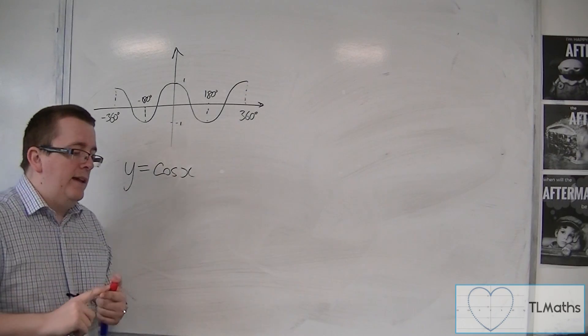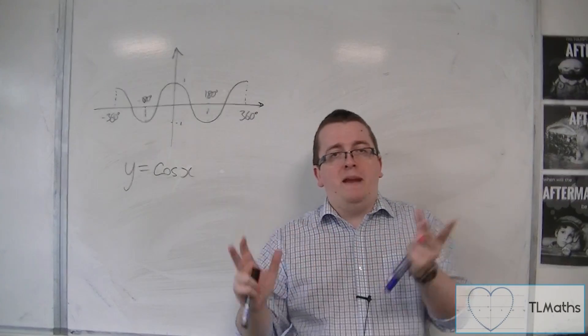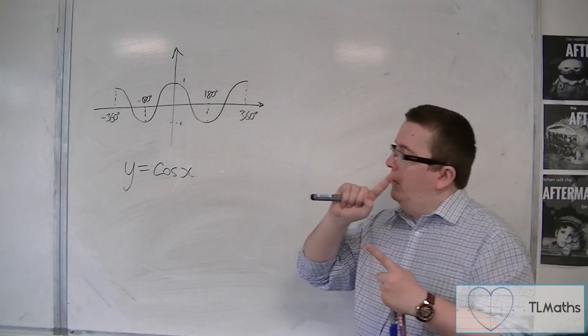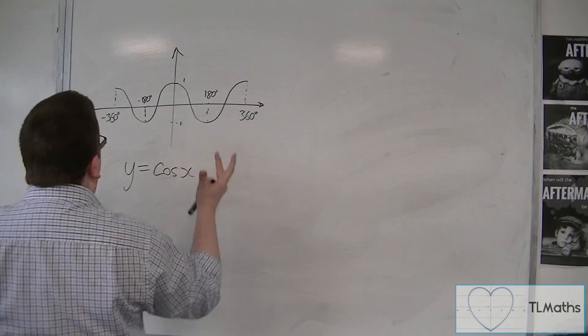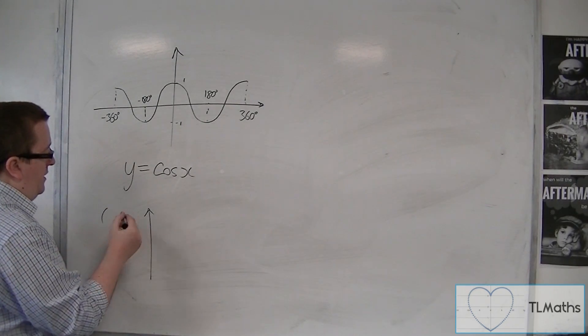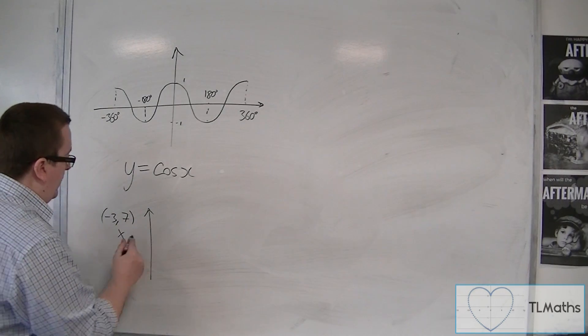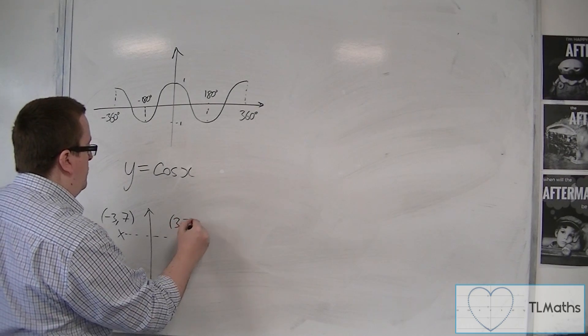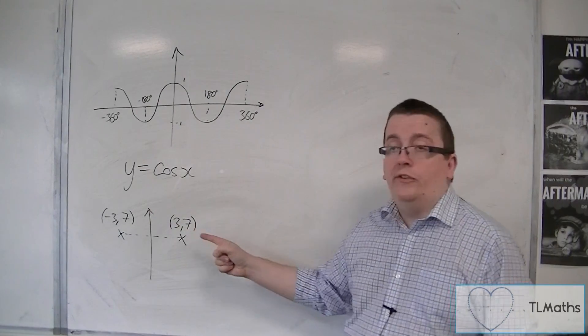Now, if we look back at the information that we looked at with reflections, we didn't spend a whole lot of time on it in the graph transformation section. But if you are taking a coordinate that's not on the y-axis, so if you take a point, say, here, and this has coordinate minus 3, 7, and you reflect it in the y-axis, then you get a point that now has coordinates 3, 7. The y-coordinate stays the same, but the x-coordinate changes sign.